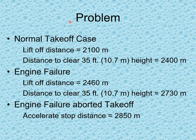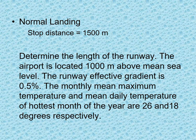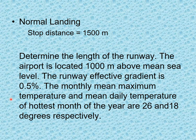Another problem: given data for normal takeoff case, engine failure with takeoff, engine failure aborted takeoff, and normal landing — determine the length of the runway and apply corrections. The airport is located 1,000 m above MSL, runway effective gradient is 0.5%, and the monthly mean maximum temperature and mean daily temperature of the hottest month are 26°C and 18°C respectively.